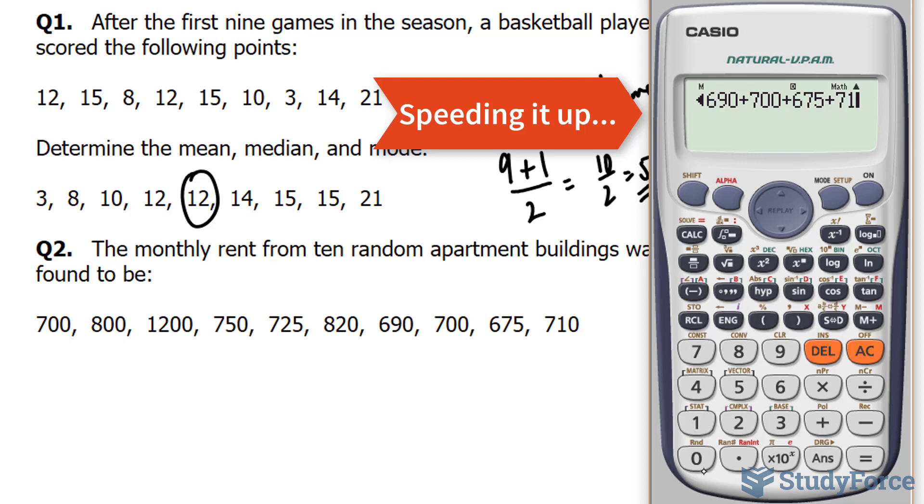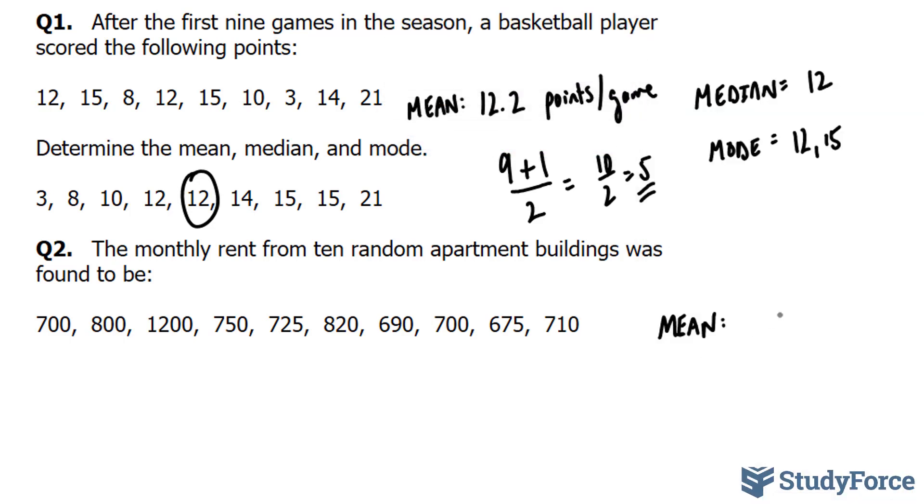700 plus 710. Dividing this by 10 gives us $777 per month.